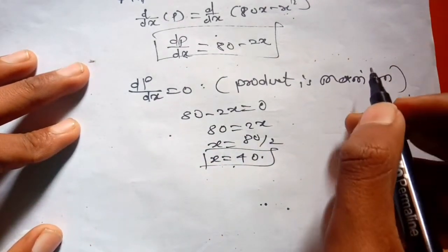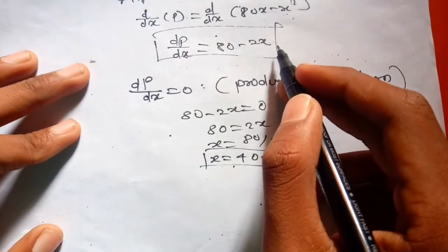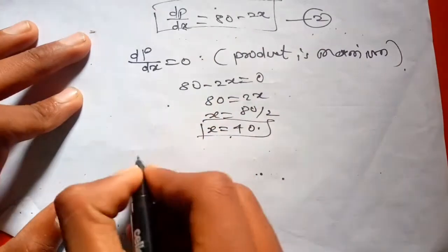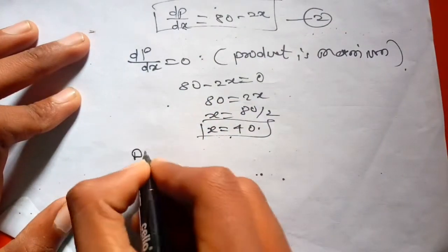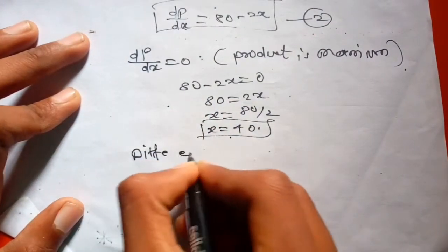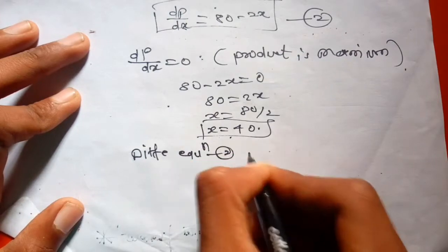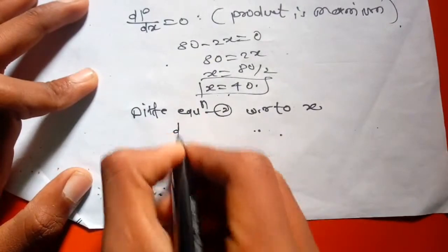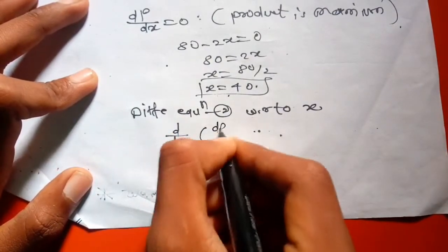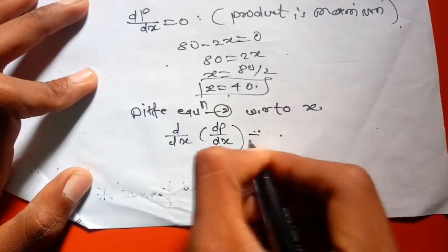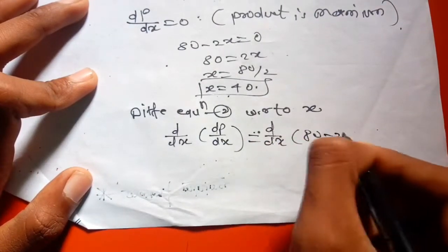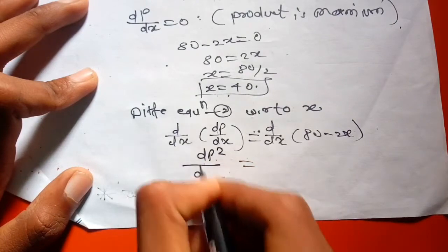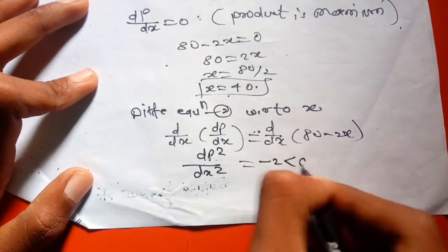Again differentiate this equation with respect to X. So d²P/dX² equals negative 2, which is less than zero.